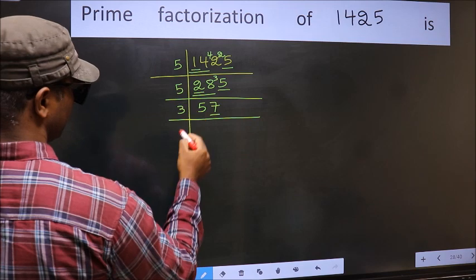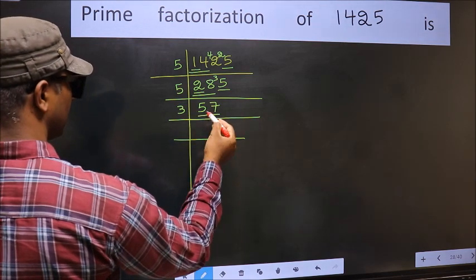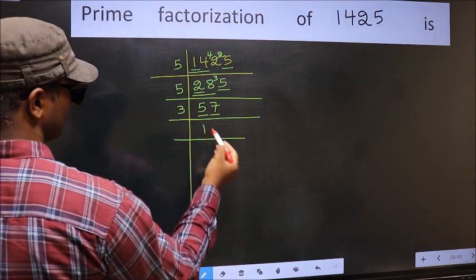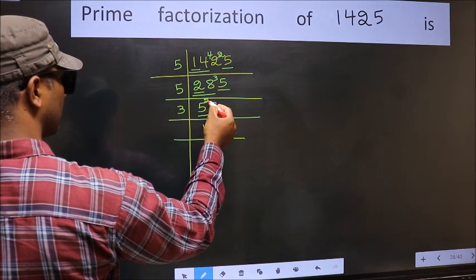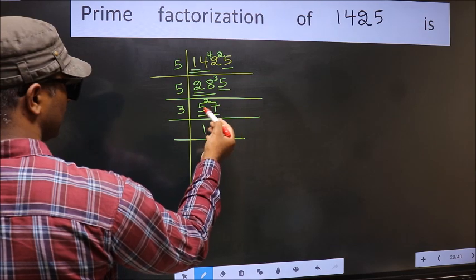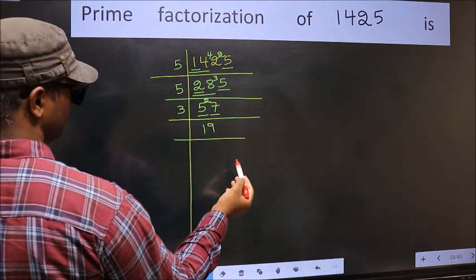So take 3 here. First number is 5. A number close to 5 in 3 table is 3 times 1 is 3. 5 minus 3 is 2, 2 carried forward makes 27. When do we get 27 in 3 table? 3 times 9 is 27.